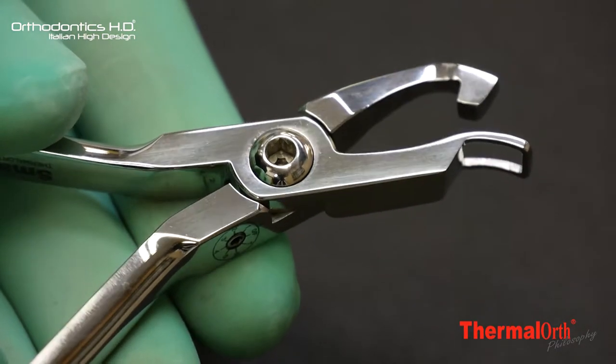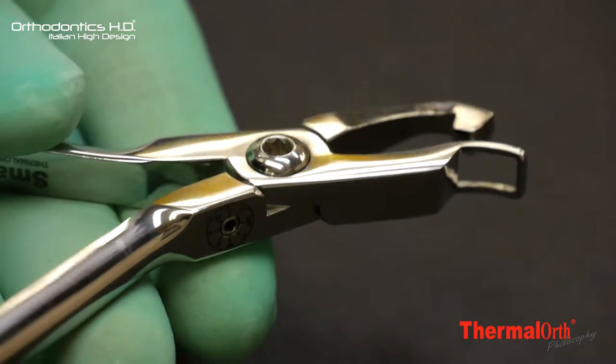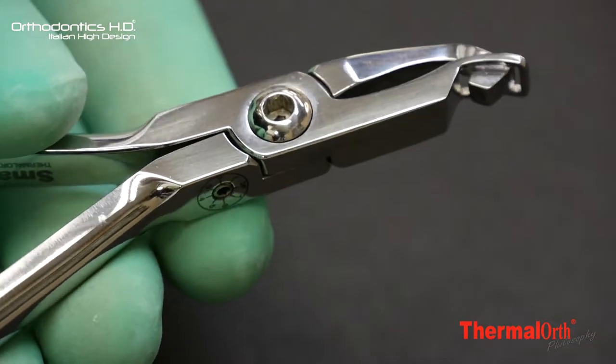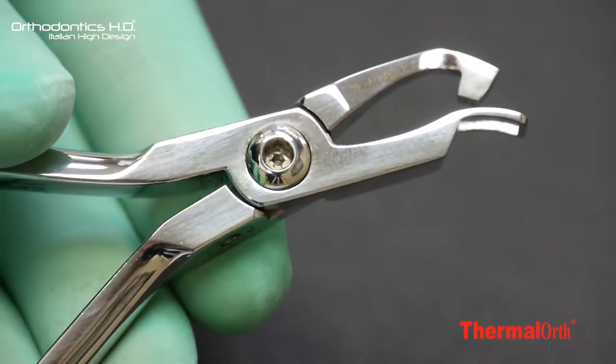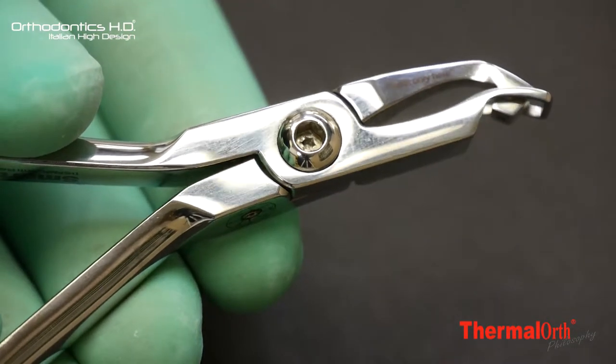the bite plane plier is the appropriate tool. The operator has a plier that instantly allows him to create a bump in the incisor back area with rapidity and precision.